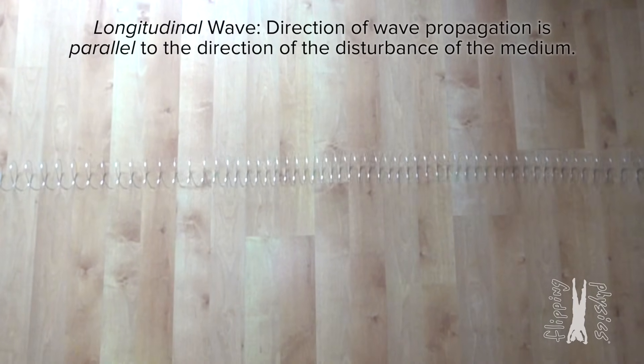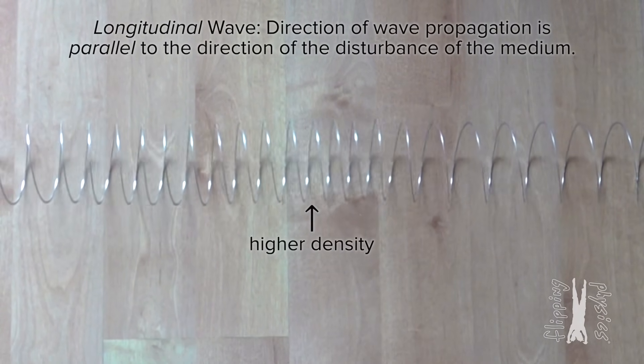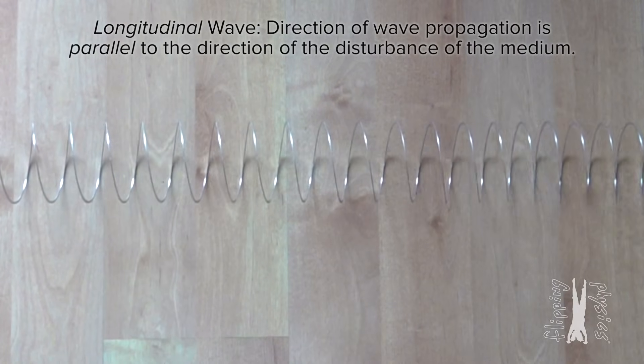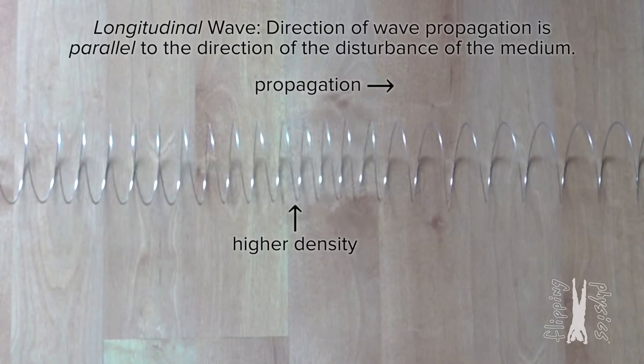And when we zoom in a bit, you can see that compression, or high density section, of the spring move from left to right in the spring. Rather than compressing the spring and then releasing it, could you push it in and then pull it back to create a full wave pulse instead of just a half wave pulse? Good point, Bo. I can do that.